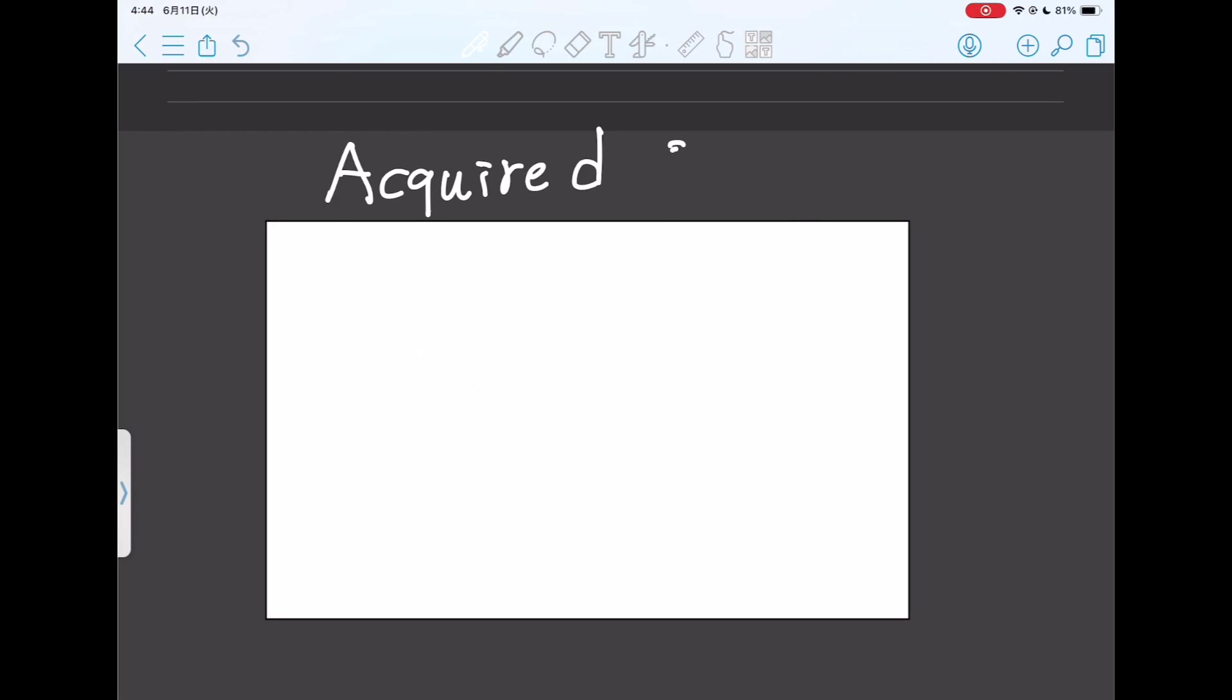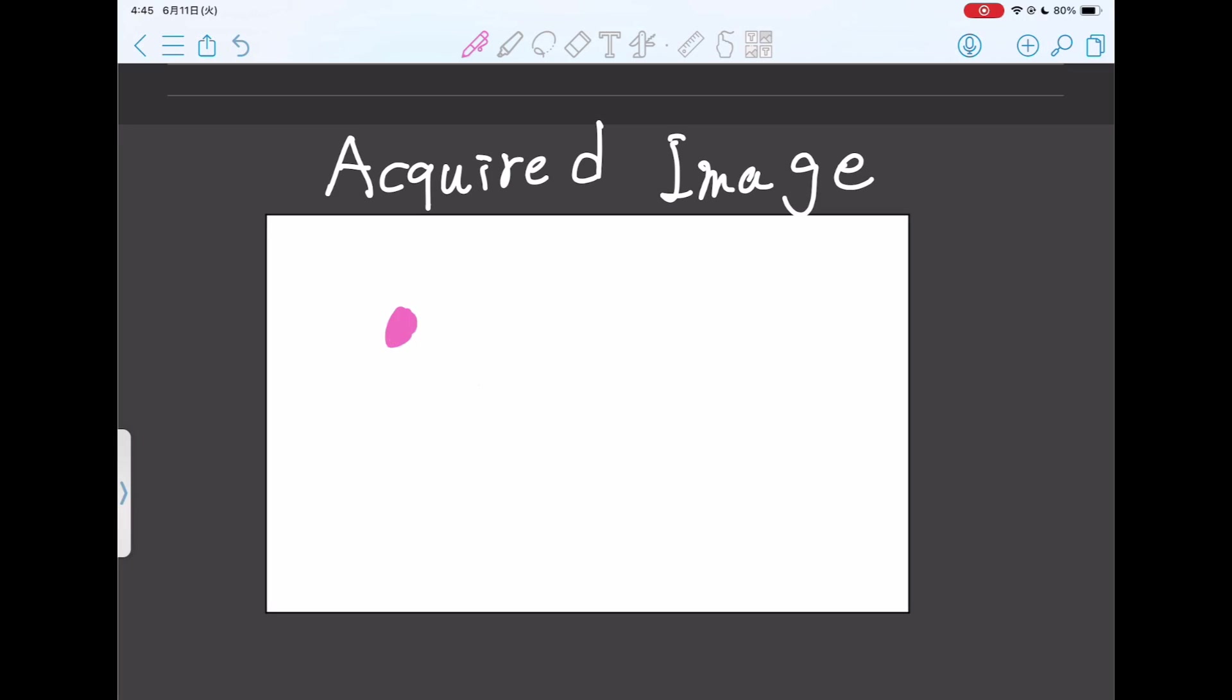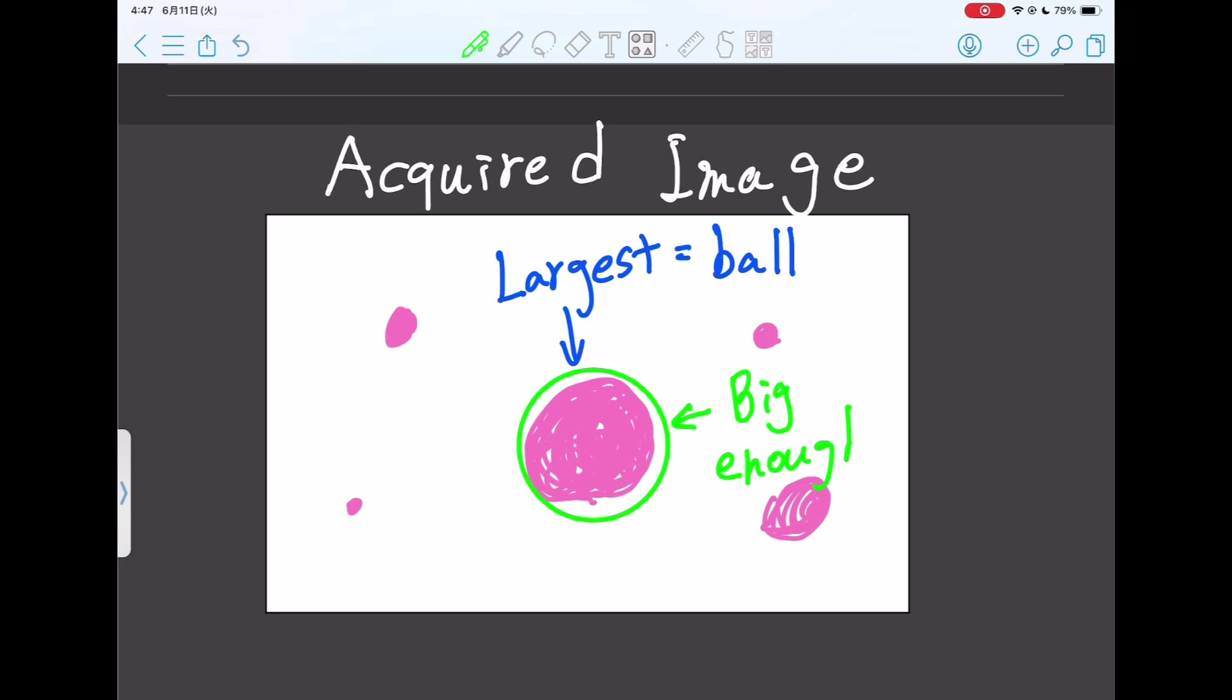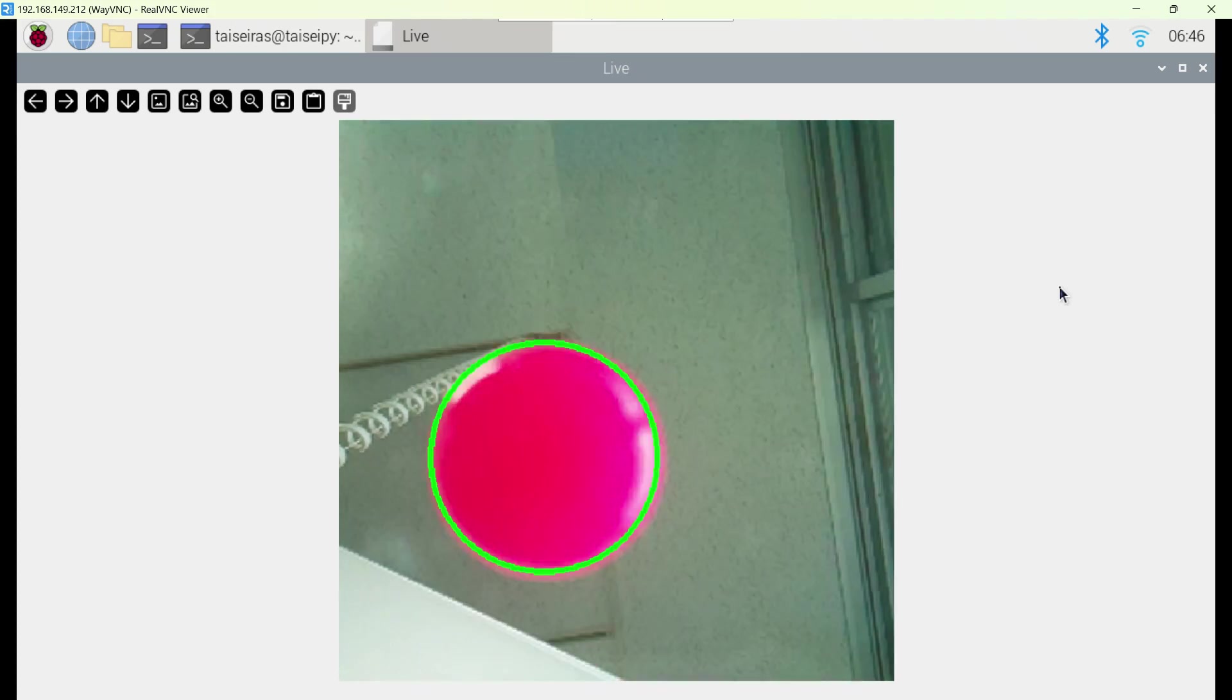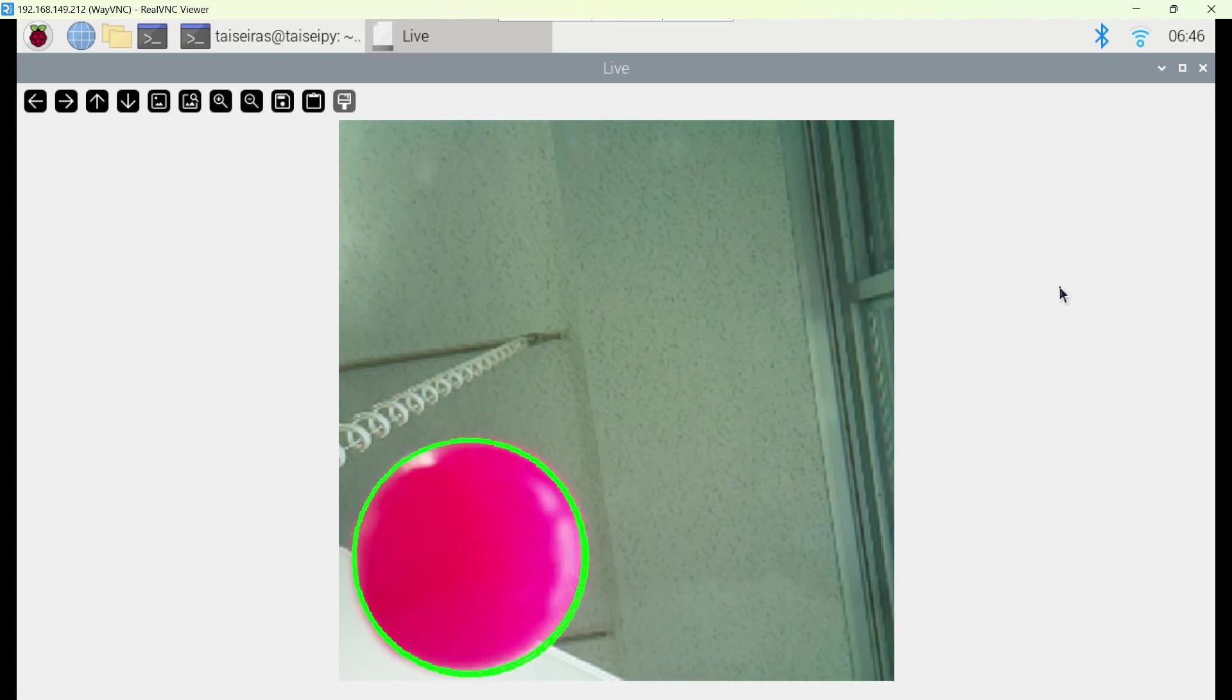In this project, the coordinates of the ball were obtained in the following way, in order to obtain an accurate position of the ball that is robust to noise. First, all pink areas in the image are selected. Assuming that the largest of these areas is the ball, find the smallest circle that can enclose the entire area. If the diameter of the circle does not exceed the threshold value, it is considered to be noise and ignored. Thus, we can see that the coordinates of the ball are accurately captured.